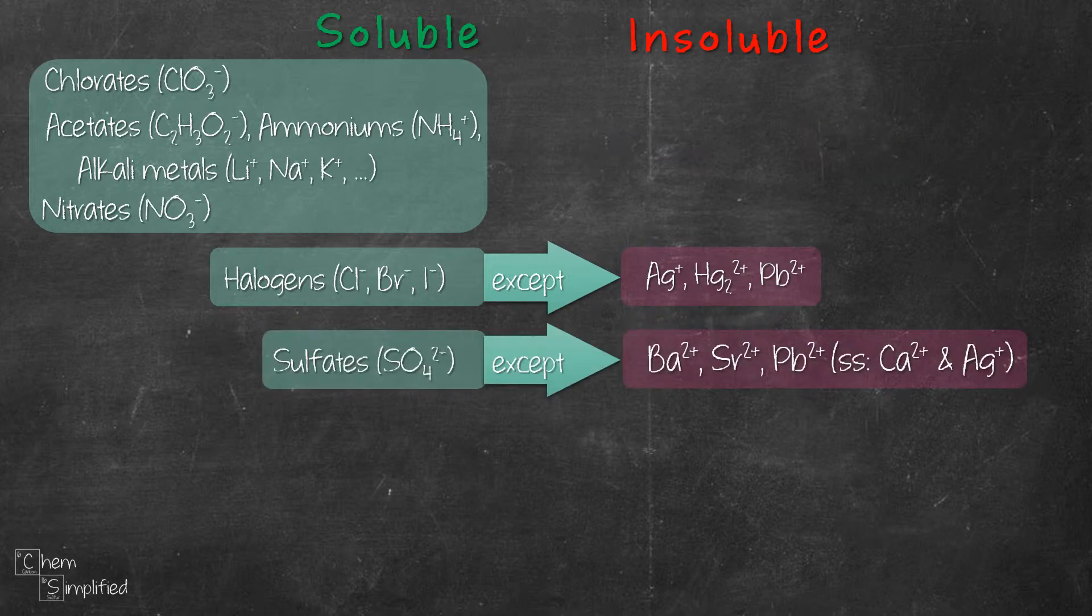Moving on to the sulfates, there are some exceptions as well. Sulfates with barium, strontium, or lead will be insoluble. Calcium and silver sulfates will be slightly soluble. Let's take SrSO4, for example. It's going to be insoluble, since Sr is part of the exception.